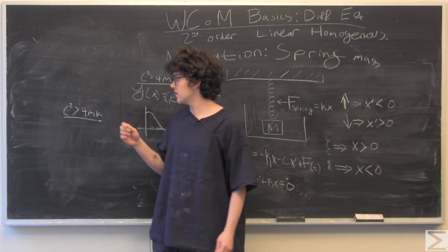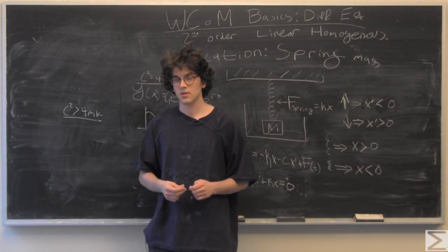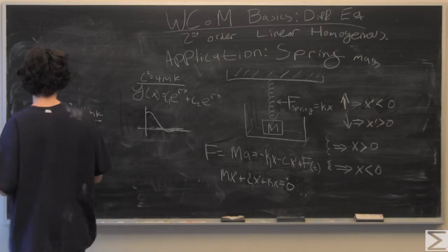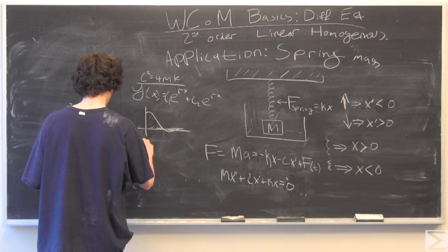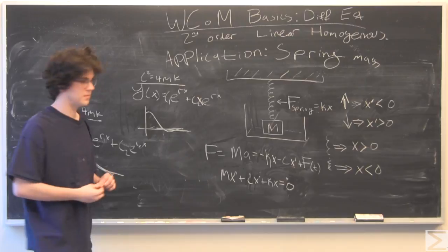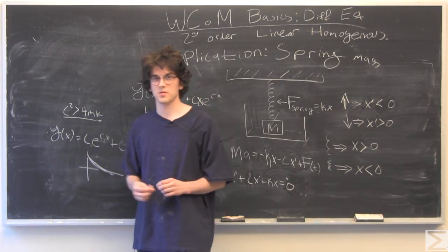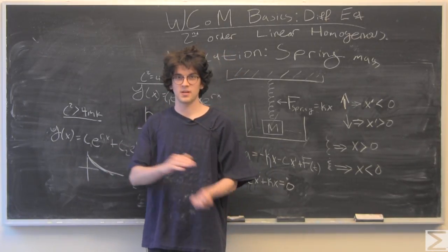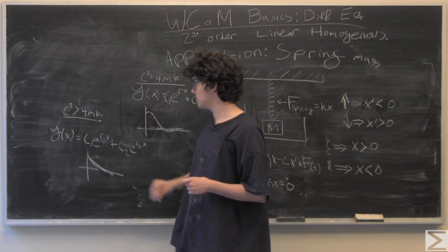Then we have the case where c squared is greater than 4mk, and that's overdamped. If you recall, we have two real and distinct roots. In this case, we're just going to have no oscillations at all. It's just going to hit that damper and just flatten out.